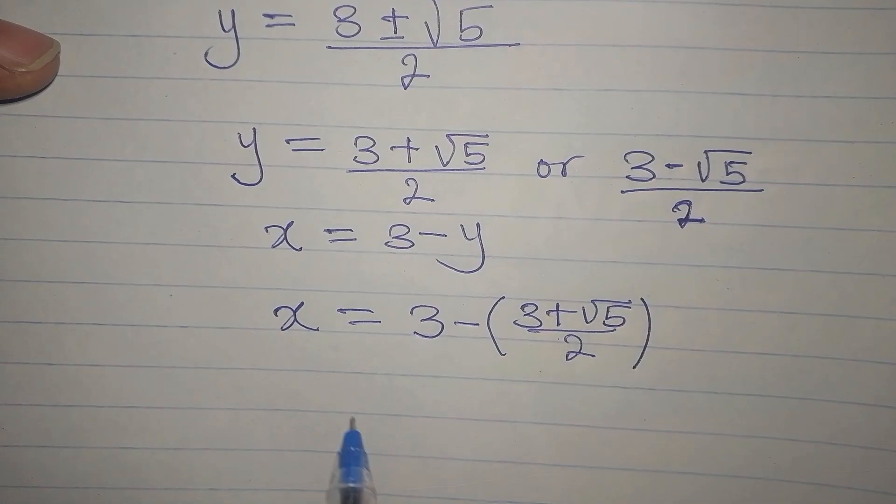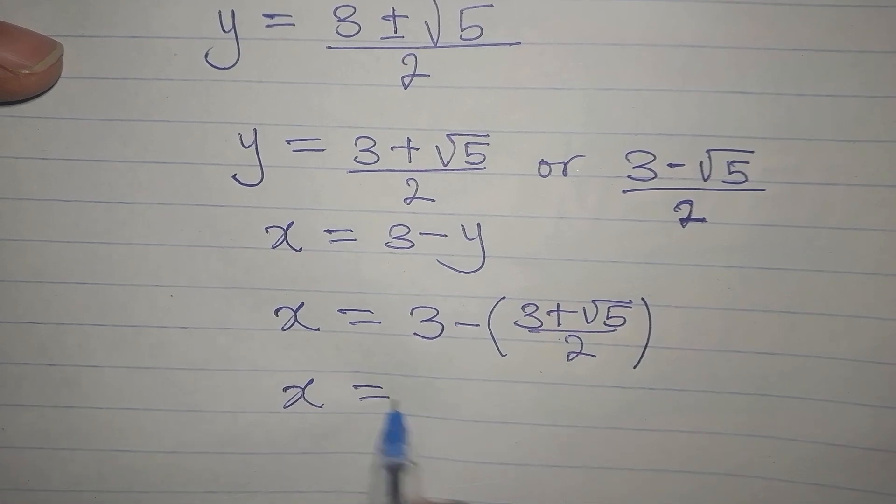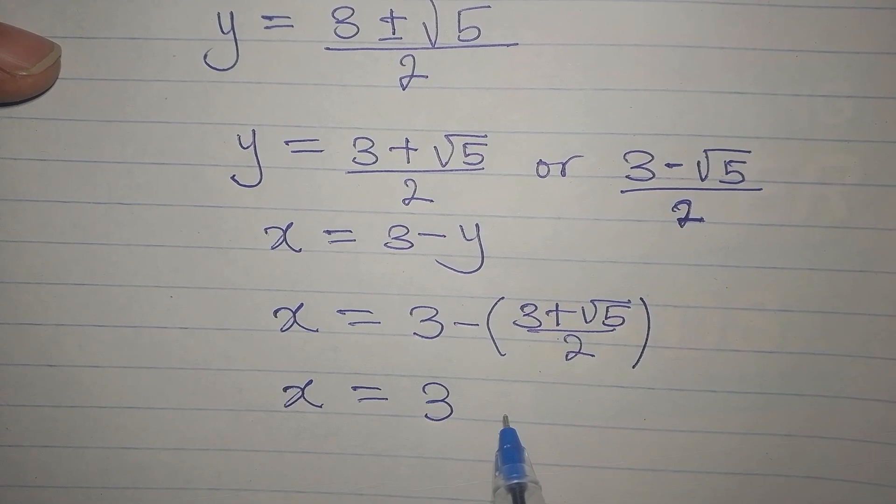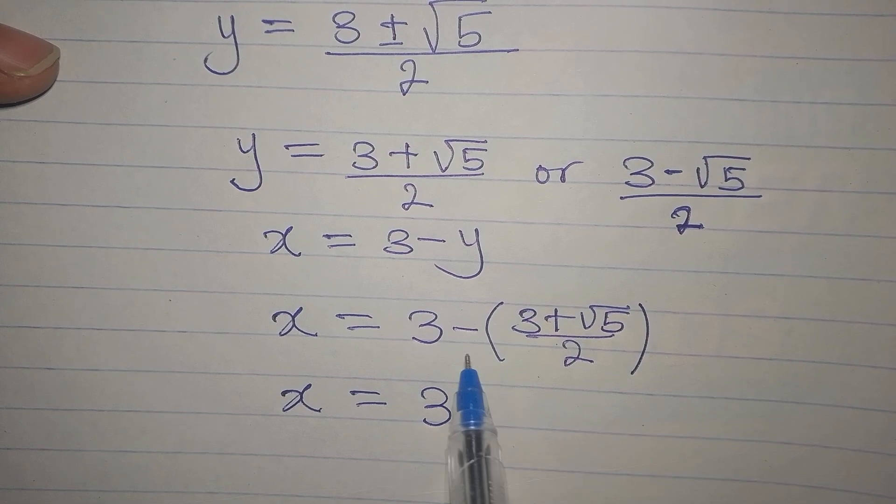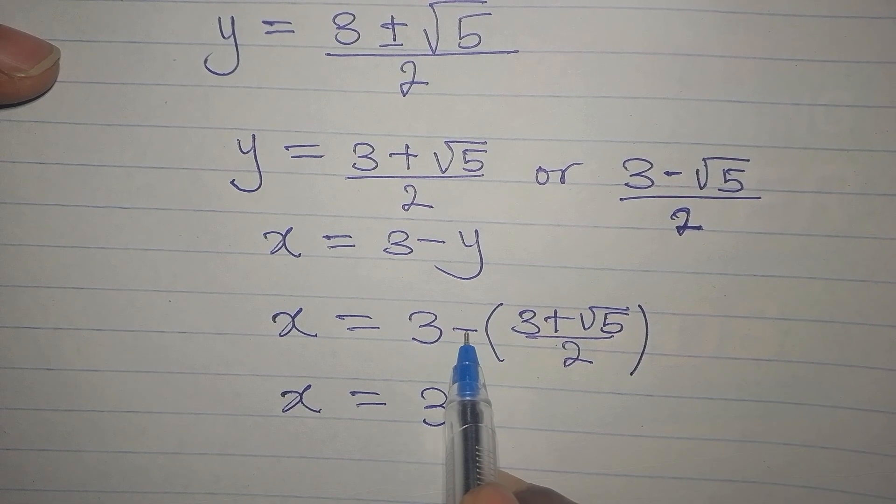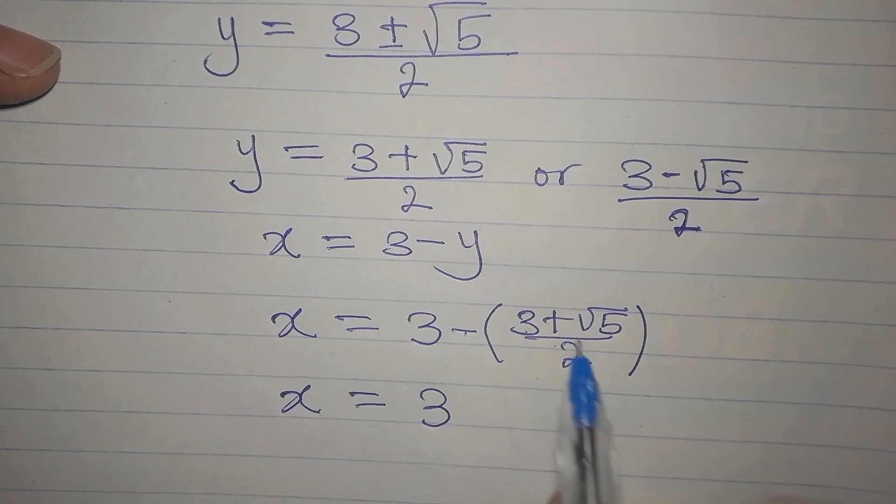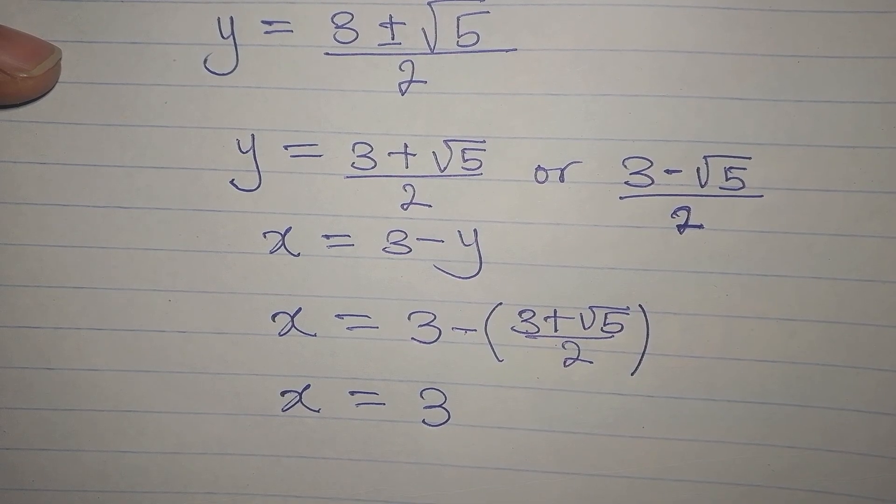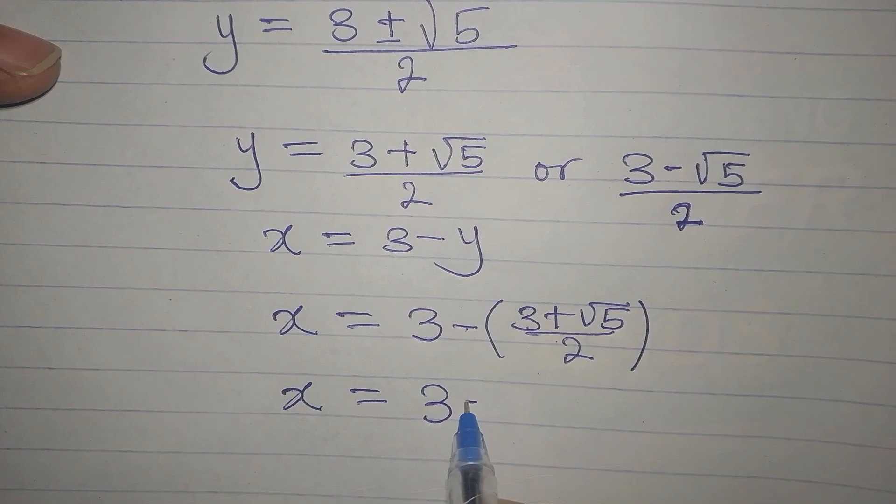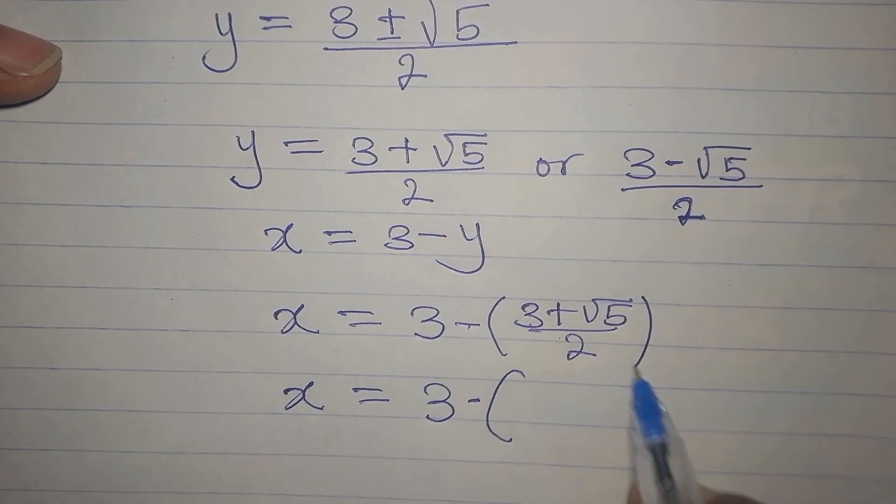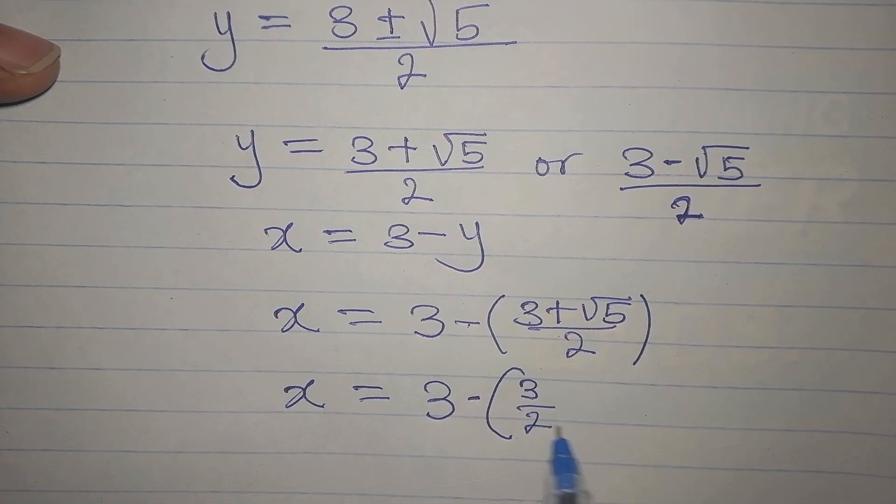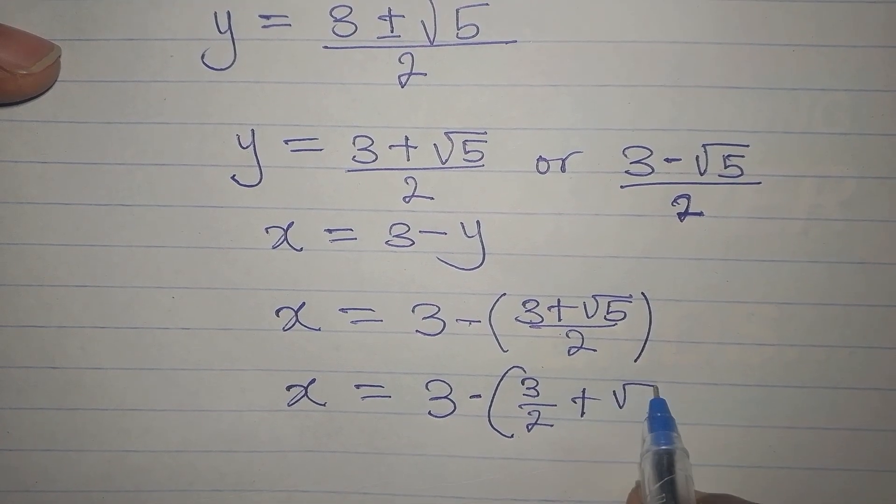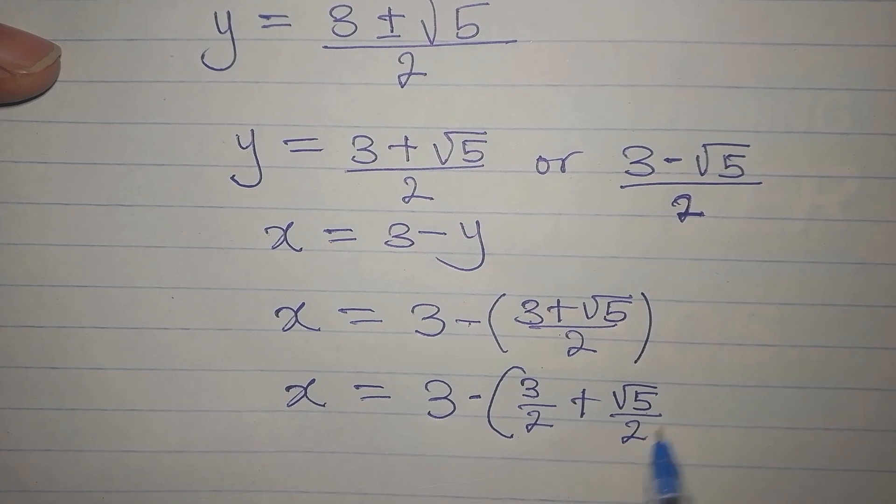So we open the brackets so that we'll have 3, and then we'll now have negative multiplied by this. If it's going to confuse you, see what you can do as well. Open these brackets. This here can be written as 3 over 2 plus root 5 over 2.